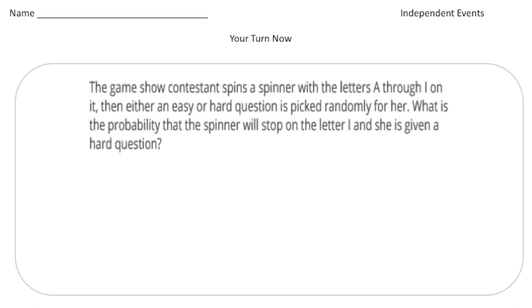All right, welcome back. Let's see how you do this independent probability question. So it says the game show contestant spins a spinner with the letters A through I on it. And then either an easy or hard question is picked randomly for her. What is the probability that the spinner will stop on the letter I and she is given a hard question?